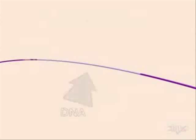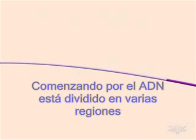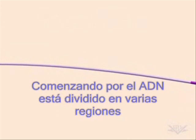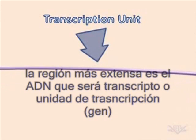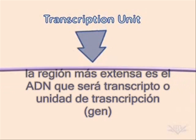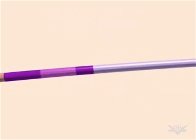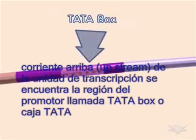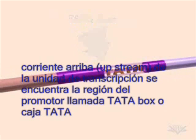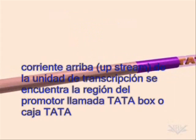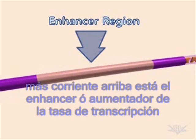Transcription begins with a strand of DNA, which is divided into several important regions. The largest of these is the transcription unit — the portion of the DNA that will be used to produce RNA. Upstream of the transcription unit is the TATA box. An enhancer region may also be involved.